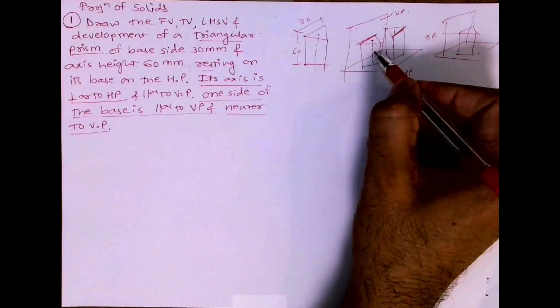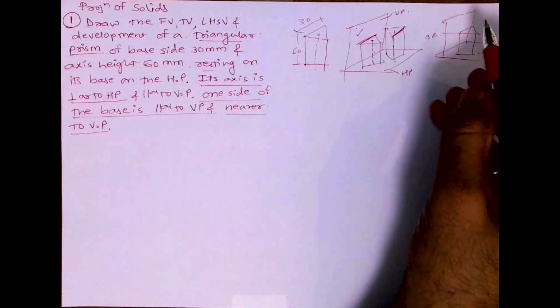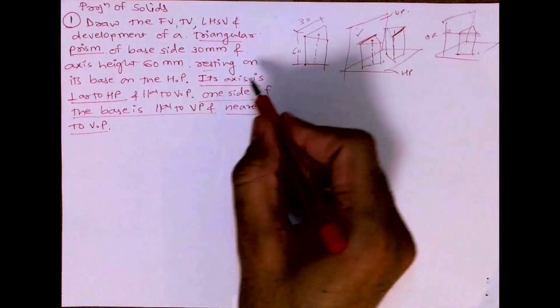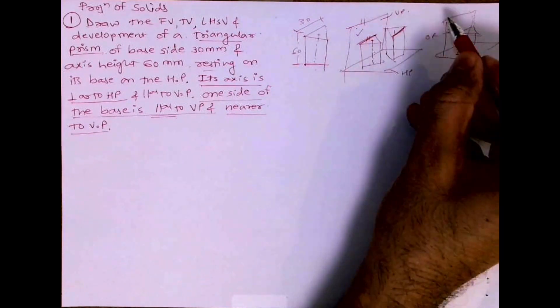And nearer to VP. So when they say nearer to VP, this one is correct. This is away from VP. And in this it is perpendicular to VP. So when they say parallel to VP, it should be parallel to XY line like this.